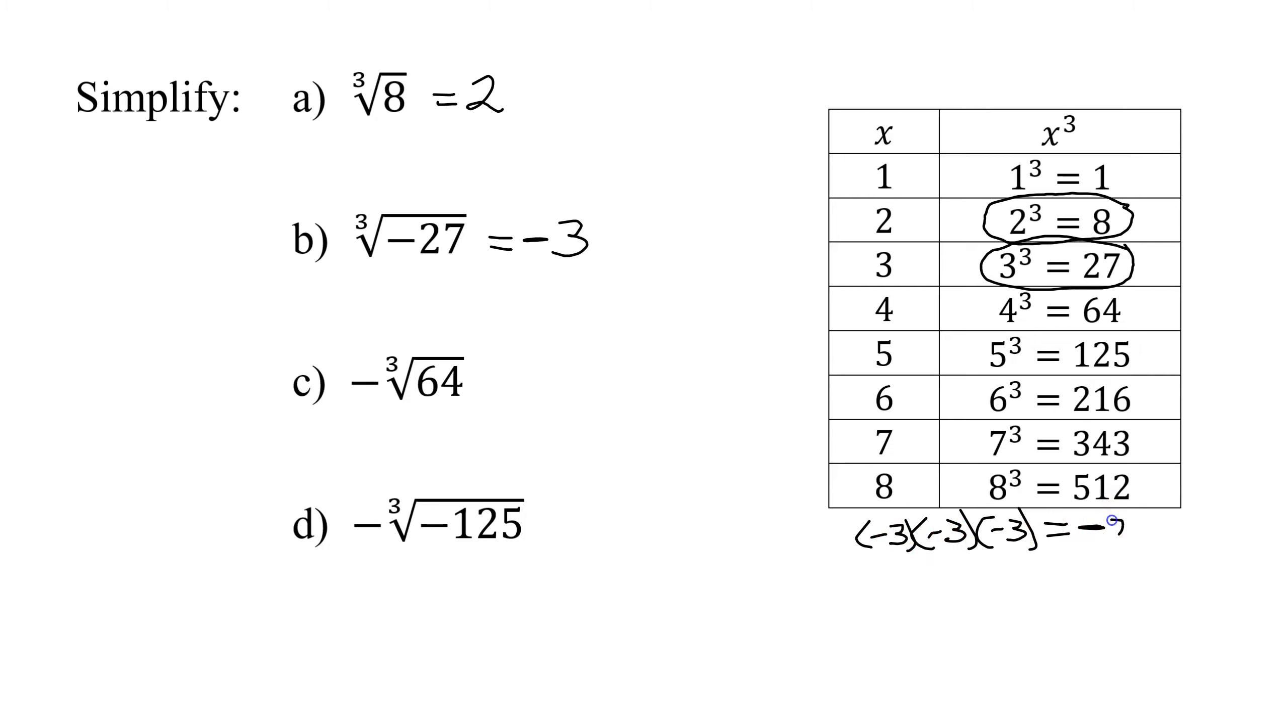Three times three is nine. Nine times three is 27. Now let's look at the third example. I have the negative cube root of 64. Notice when I have a negative outside a radical sign, it really means I have negative one times my radical.